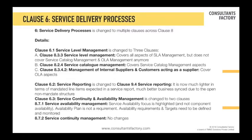Coming to clause 6 of ISO 20000:2011 — all these are 2011 clauses mapped to 2018. Under clause 6, service delivery processes, I'll highlight the important ones. Clause 6.1, service level management, has been split into three: service level management, service catalog, and management of internal suppliers — a great change. Clause 6.2, service reporting, has been shifted to clause 9.4 and has become way lighter in terms of expectations — another great change.